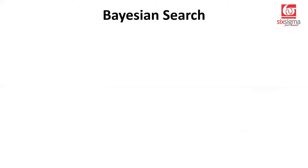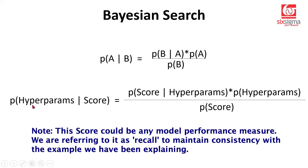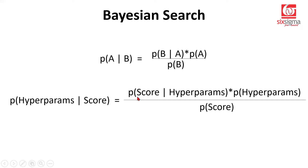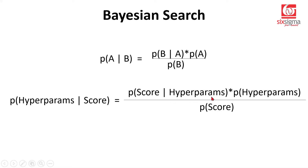The answer to this problem comes in the form of Bayesian search. To quickly refresh, recall the formula for Bayes theorem in probability. The relevance here is that we're trying to solve: given a good recall score, what is the hyperparameter combination? In other words, given an optimal recall score, what is the best hyperparameter combination? This is called the posterior probability, and it depends on the probability of the optimal score given the hyperparameter combination. From the entire hyperparameter space, we randomly sample some combinations and observe scores, then gradually improve toward the optimal combination.